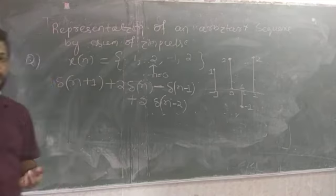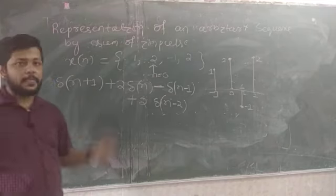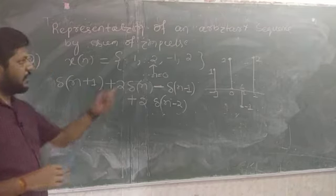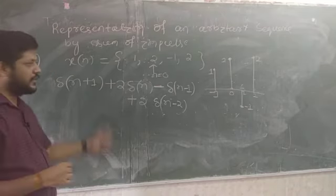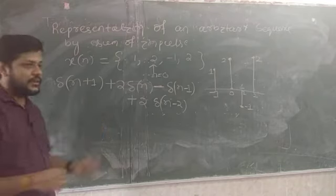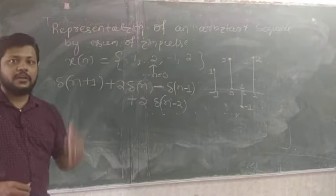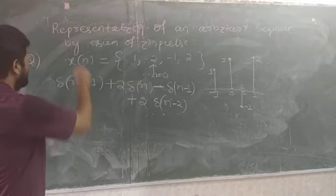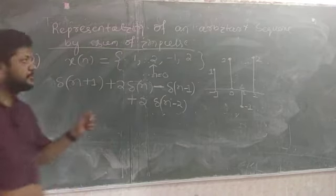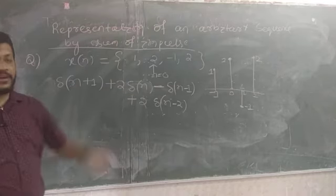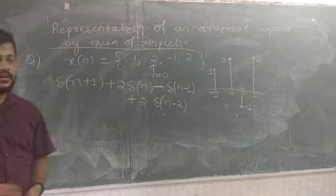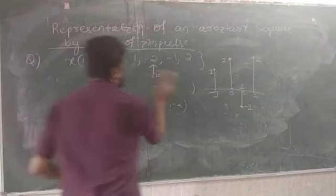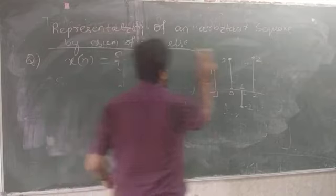Any arbitrary discrete sequence can be represented by a collection of shifted impulses — a sum of impulses. Before studying finite and infinite impulse response systems, we must understand this impulse signal representation.